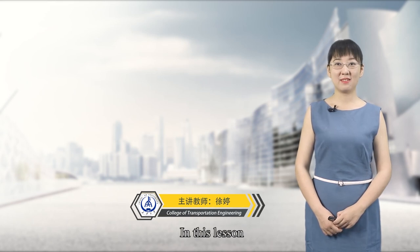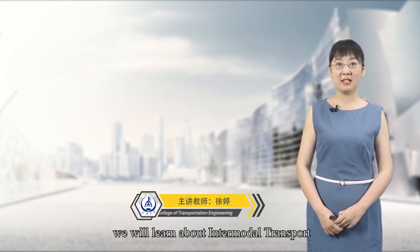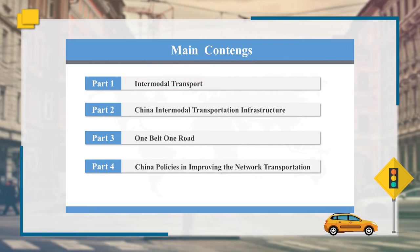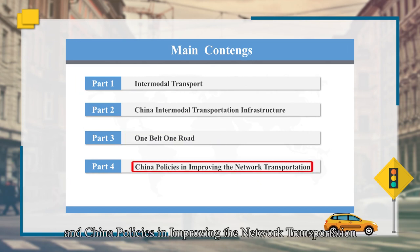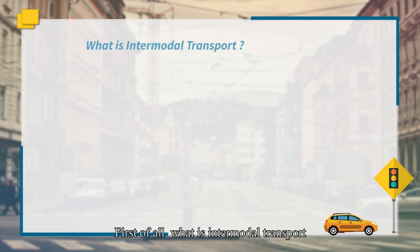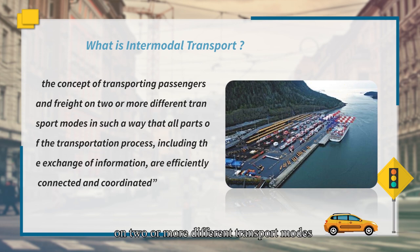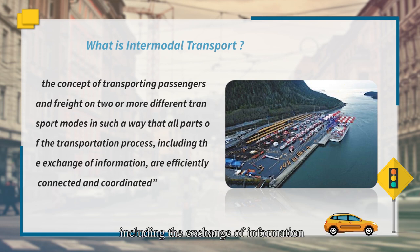Hi everyone, in this lesson we will learn about intermodal transport. It contains four parts including intermodal transport, China intermodal transportation infrastructure, One Belt One Road, and China policies in improving the road network transportation. First of all, what is intermodal transport? Intermodal transport is defined as the concept of transporting passengers and freight on two or more different transport modes, in which all parts of the transportation process including the exchange of information are efficiently connected and coordinated.